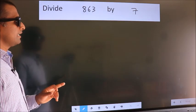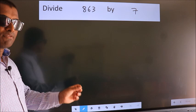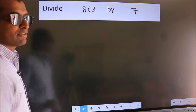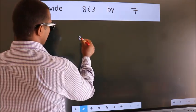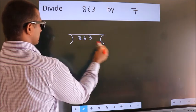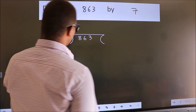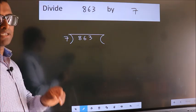Divide 863 by 7. To do this division, we should frame it in this way. 863 here, 7 here. This is your step 1.